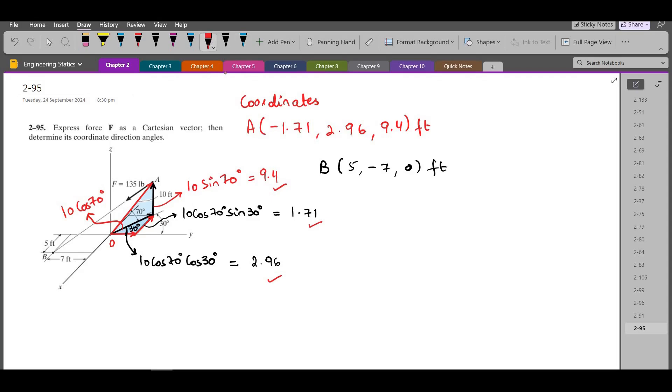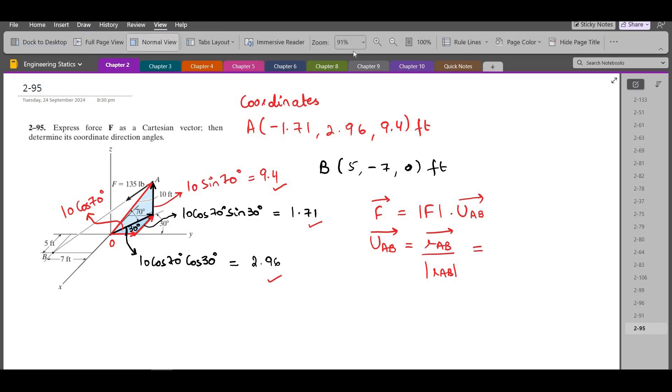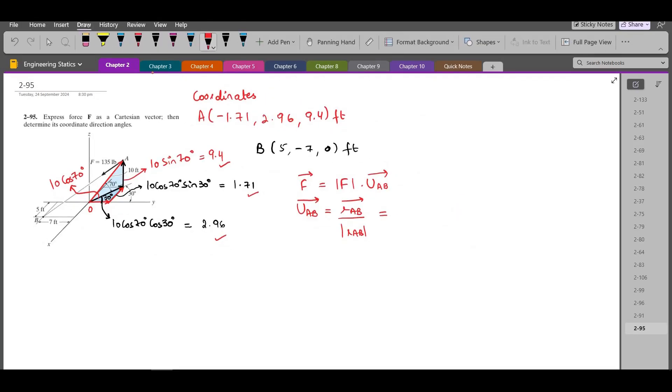Now this force F can be written as, in terms of vector form, as the magnitude into the unit vector between the points A and B. And for the unit vector AB, it can be written as the position vector RAB over its magnitude. And the position vector RAB can be found by subtracting the coordinates of point B from the coordinates of point A.